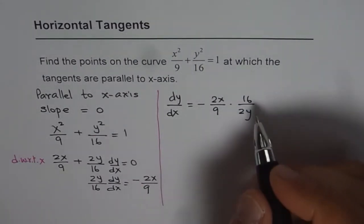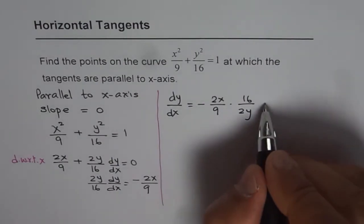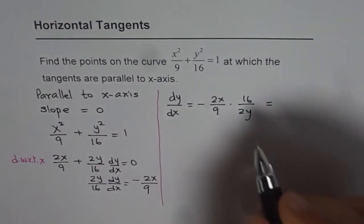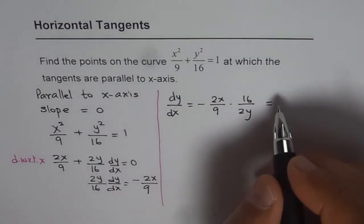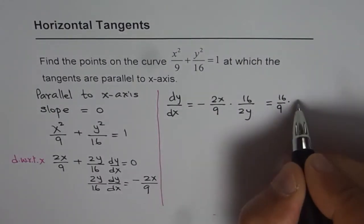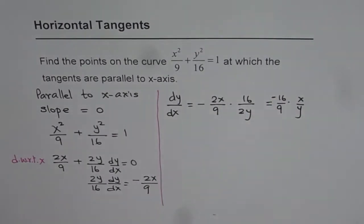That gives us 2 and 2 cancel. We get -16/9 × x/y. So that is what we have.